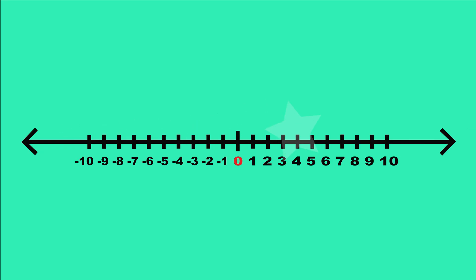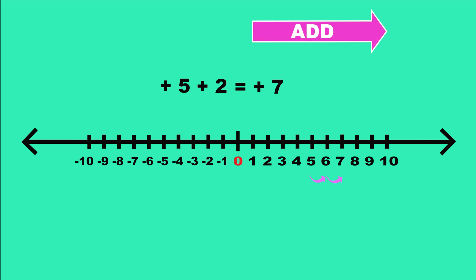How do we add and subtract with positive and negative numbers? Again, let's use money. Let's say I have $5 and a kind friend gives me $2 — I now have $7. On the number line, we start at positive 5 and move two places to the right to get 7 as the answer. This means that addition on the number line is moving to the right.